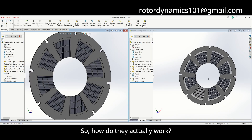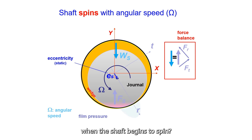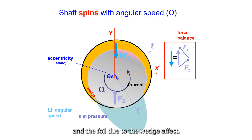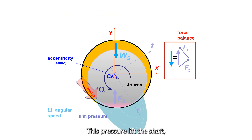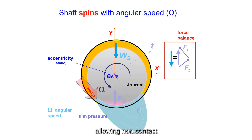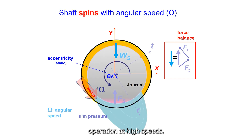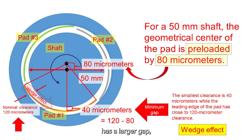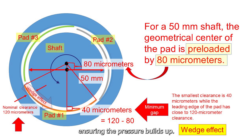So, how do they actually work? When the shaft begins to spin, a thin gas film forms between the shaft and the foil due to the wedge effect. This pressure lifts the shaft, allowing non-contact operation at high speeds. The bearing design ensures the leading edge of the foil has a larger gap, and the trailing edge has a smaller gap, ensuring the pressure buildup.